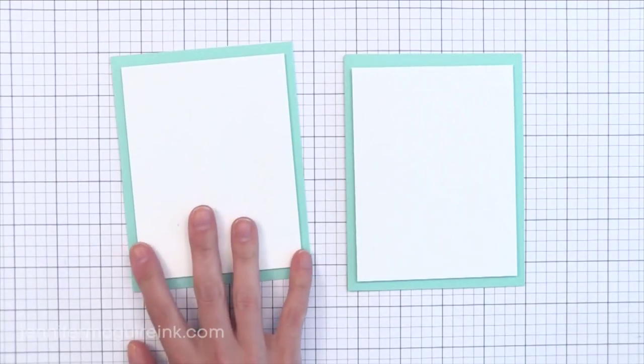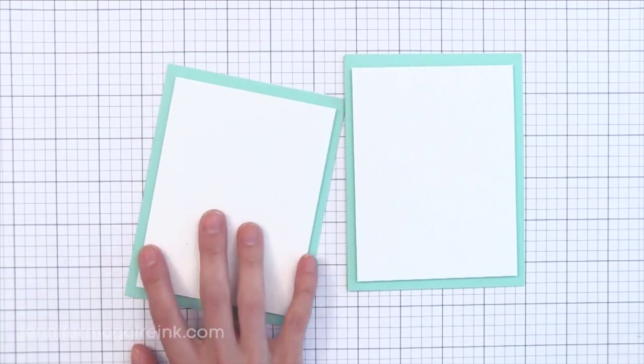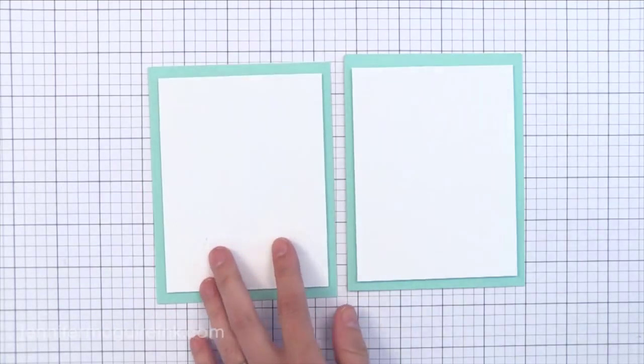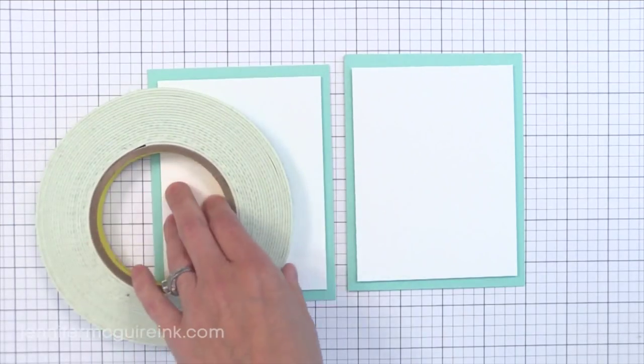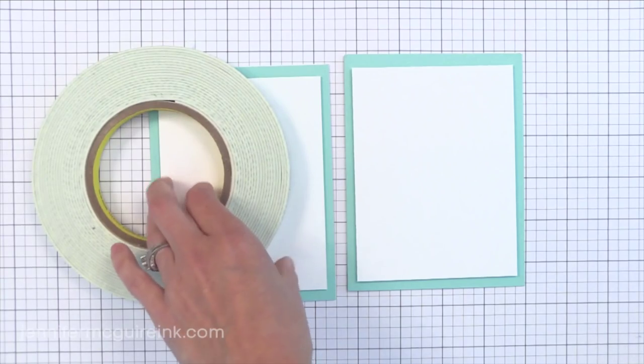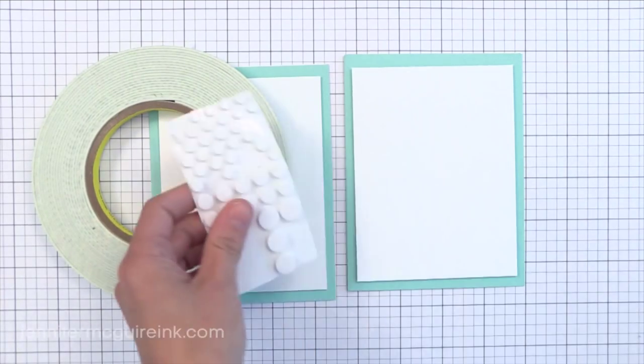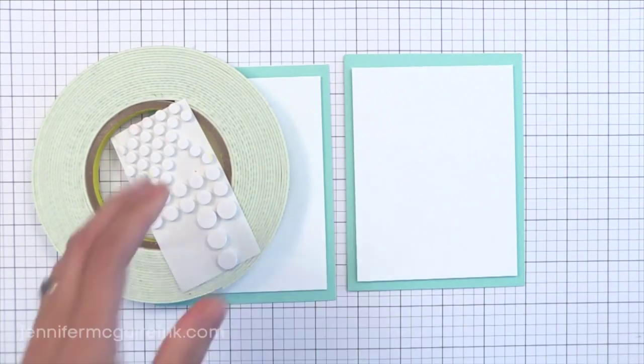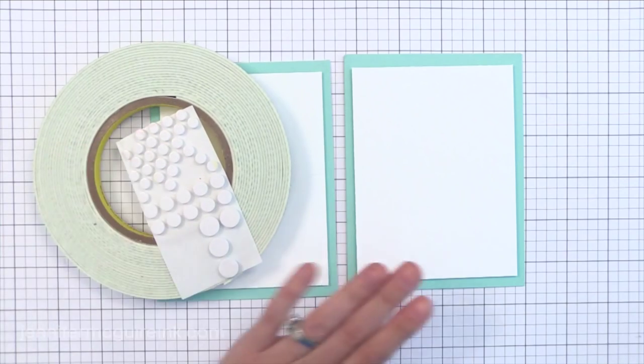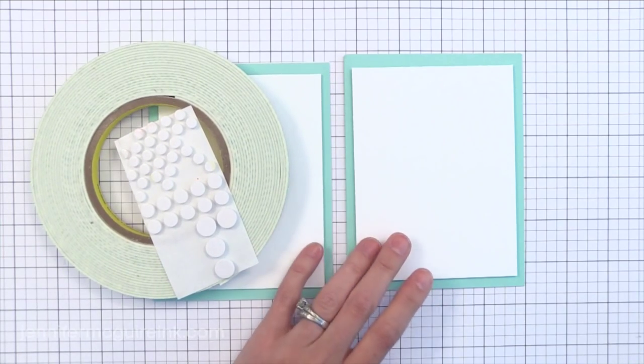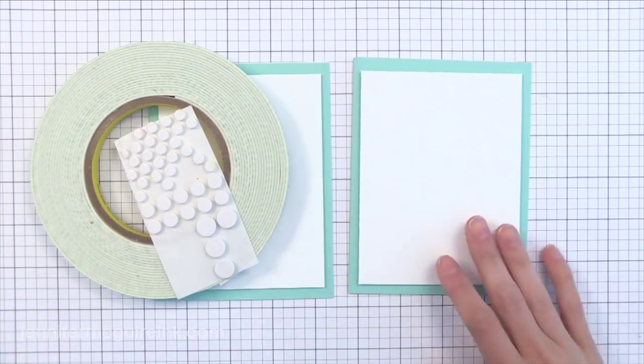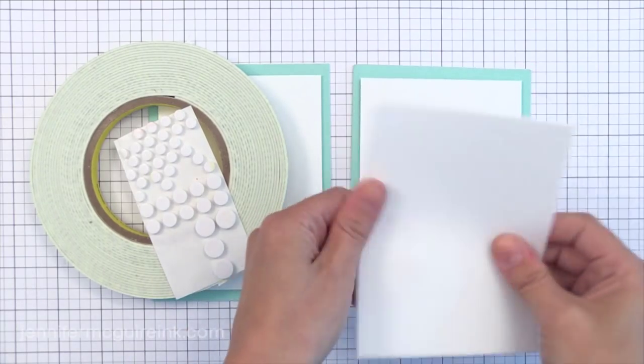The card on the left uses foam tape strips to add that white card stock. So I just used several pieces of foam tape strips. This is the tape that I love. I love, love, love this roll. It's a large roll that lasts forever. You could use foam dots or foam squares for the same effect. I just find the foam tape is more cost effective and I still use it and I'll explain when. So that's what I used on the card on the left.